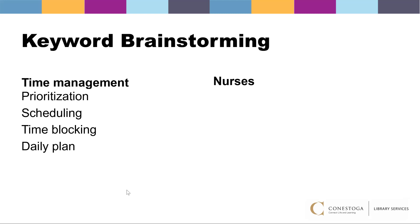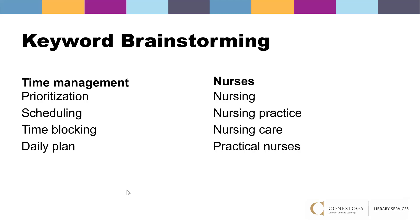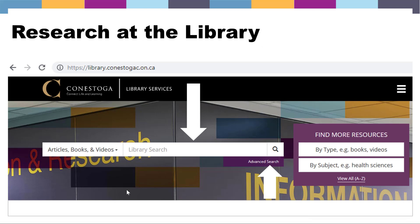For time management, related terms and synonyms include prioritization, scheduling, time blocking, and daily plan. For the key term nurses, we can come up with some similar words like nursing, nursing practice, nursing care, and practical nurses. Now that we've developed a set of keywords, related terms, and synonyms, we can use these terms to run several searches and find the most applicable results within the library's research databases.